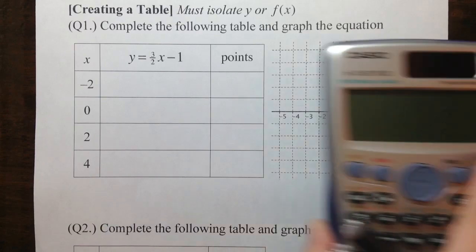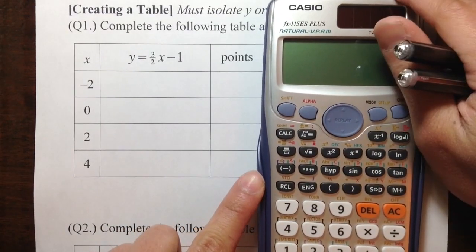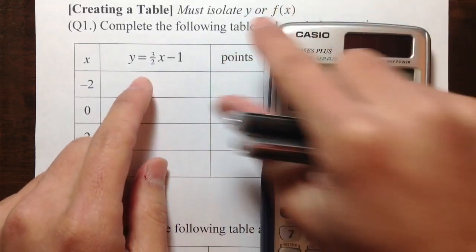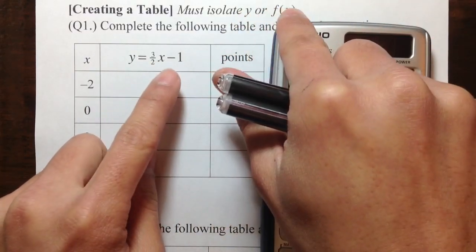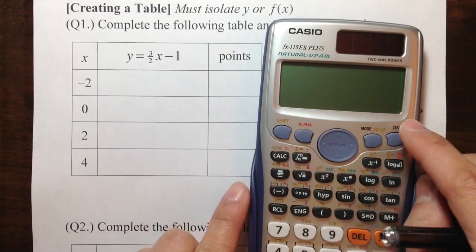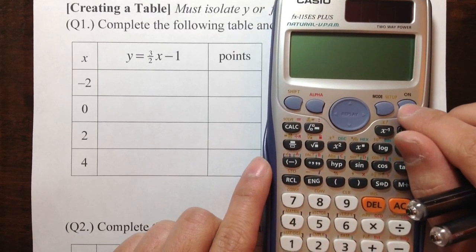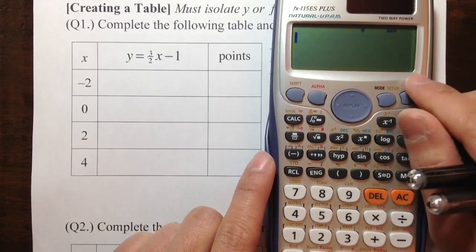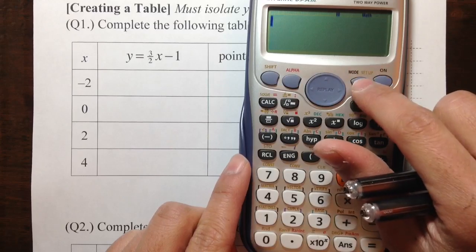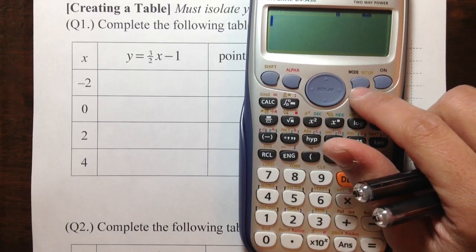But if we have this calculator, it can actually help you to generate the table. The first thing is we need to isolate y, or f of x. So in this case, it's already isolated for us, so that's a good case. Turn it on, and the best place to go is the mode, because the mode makes this calculator different than the others. Go to mode.